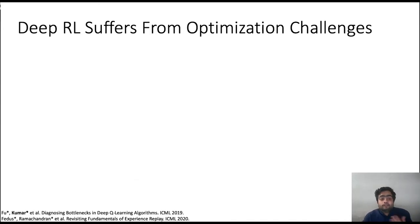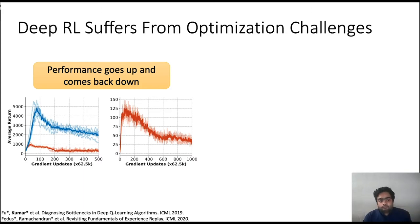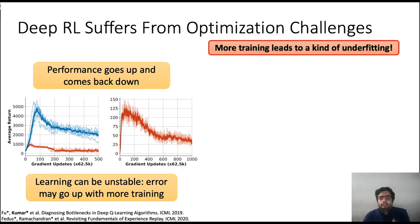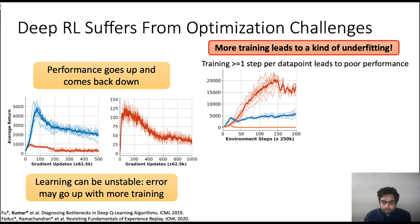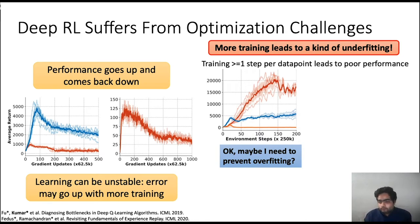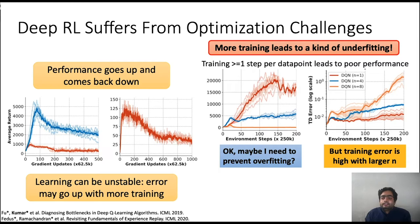Deep RL algorithms suffer from a number of optimization challenges. For example, performance may go up and come back down as you train more, and learning can be unstable — even training errors can go up with more training. We observe a simple scenario where more training per data point leads to an underfitting effect rather than an overfitting effect. The red line is one gradient step per data point, blue is four, and orange is eight. Counterintuitively, more updates lead to higher temporal difference error.